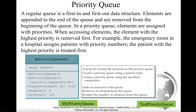We will use the heap data structure to implement the priority queue. Heap was introduced in chapter 23 when we introduced the heap sort.